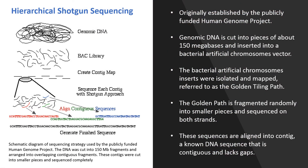The strategy originally established by the publicly funded Human Genome Project was based on a method called hierarchical shotgun sequencing. In this approach, genomic DNA is cut into pieces of about 150 megabases and inserted into a bacterial artificial chromosomes (BAC) vector and transformed into E. coli, where they are replicated and stored. The BAC inserts were isolated and mapped to determine the order of each cloned 150-megabase fragment — this is referred to as the golden tiling path.